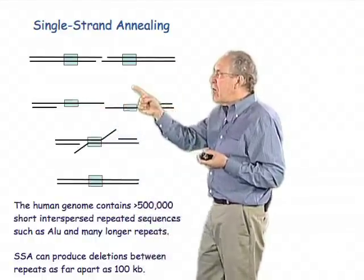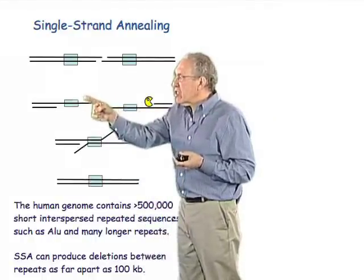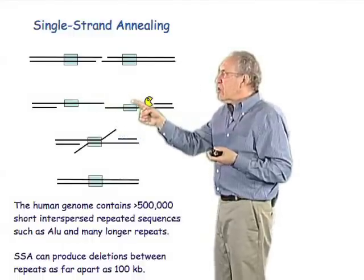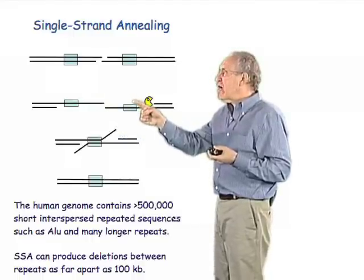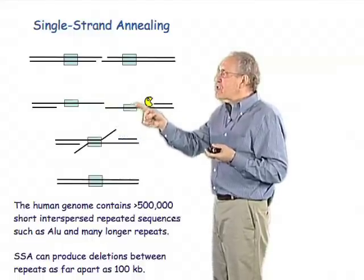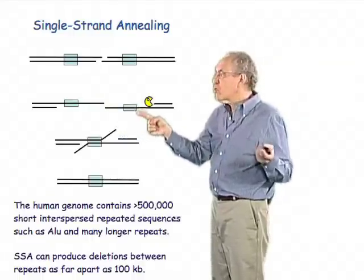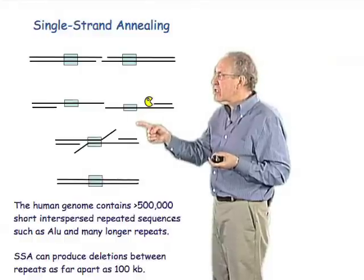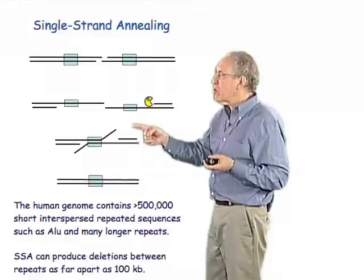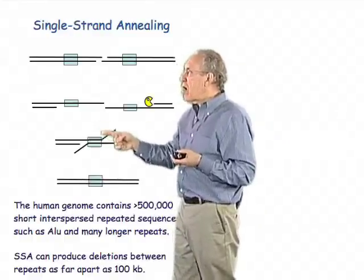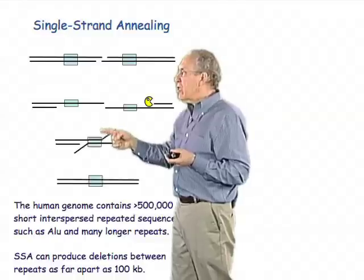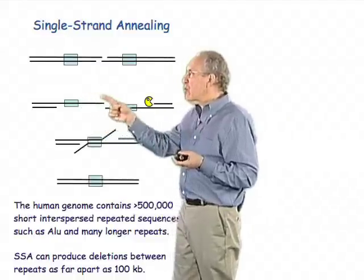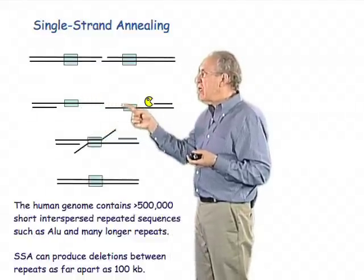Here, this sequence is Watson, and this sequence over here is Crick, and those can then anneal — which is where the process gets its name, single-strand annealing — to form a duplex, which has these extra tails, which are these additional pieces of DNA.